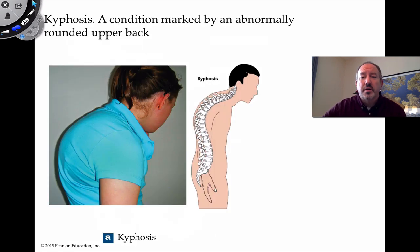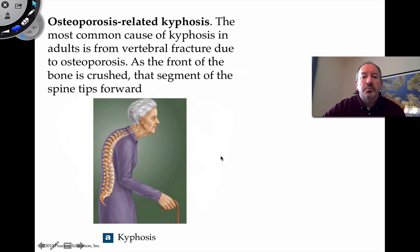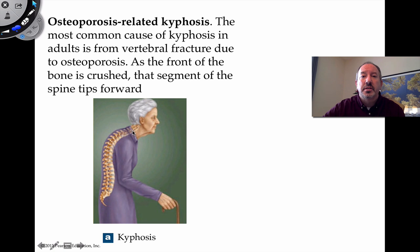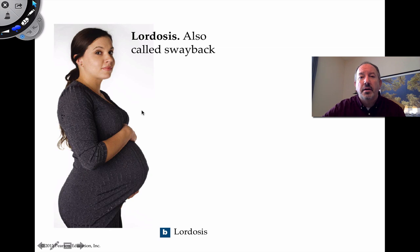Now let's talk about abnormal curves. Kyphosis is a humped back where the spine leans forward. Osteoporosis-related kyphosis is common in elderly adults — the bone becomes more brittle and porous, slight fractures develop, and over time the weight collapses the bones so the spine tips forward.